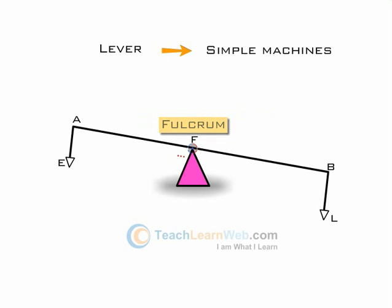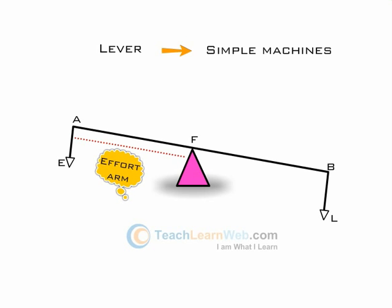The distance of the fulcrum from the point at which effort is applied is called the effort arm. The distance of the fulcrum from the point at which the load acts is called the load arm.